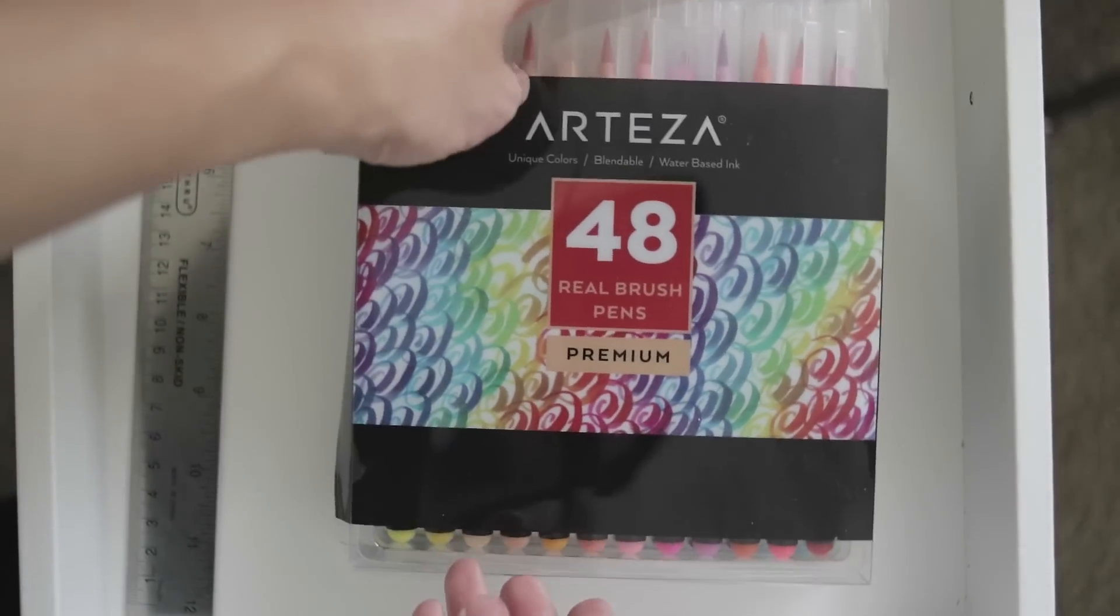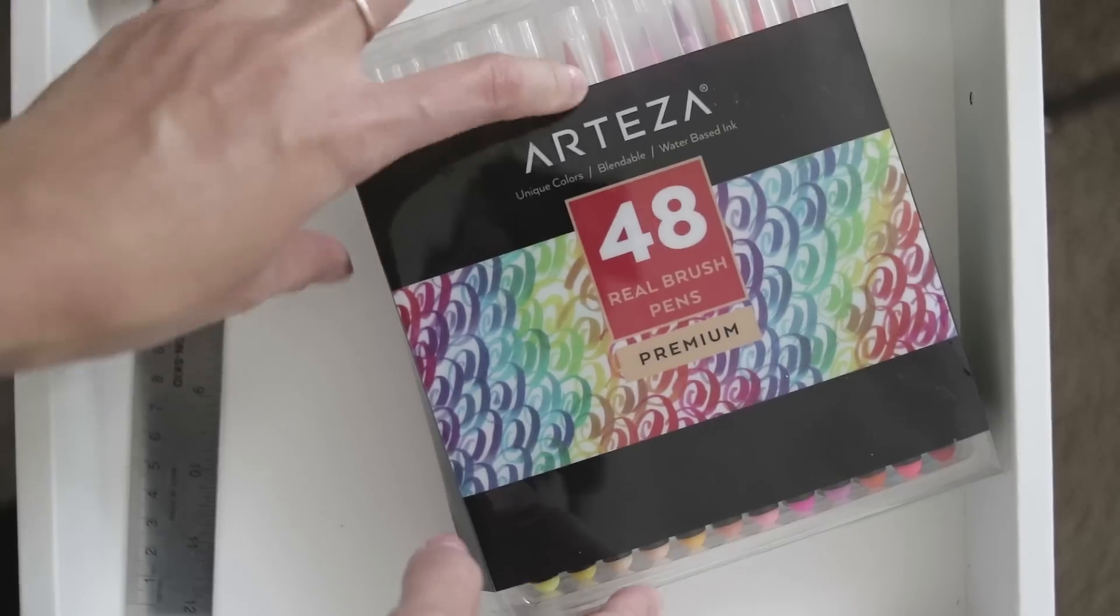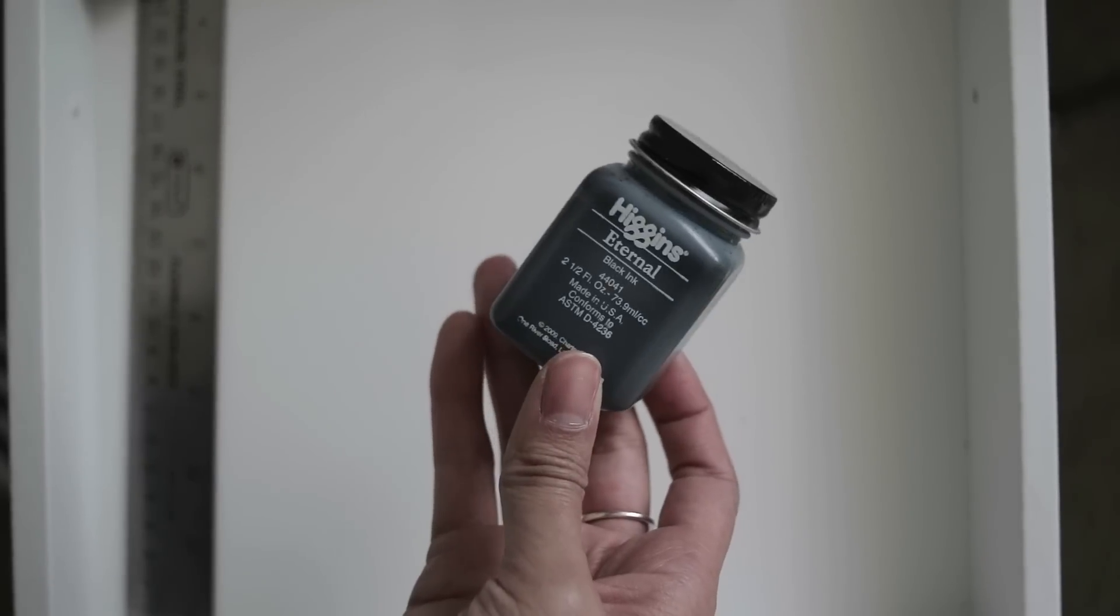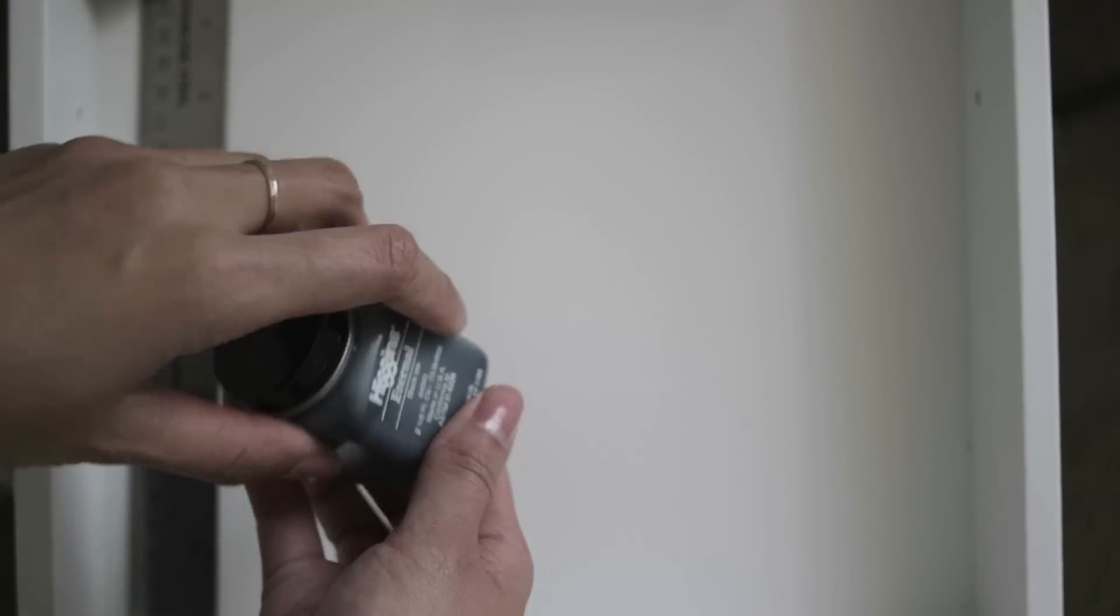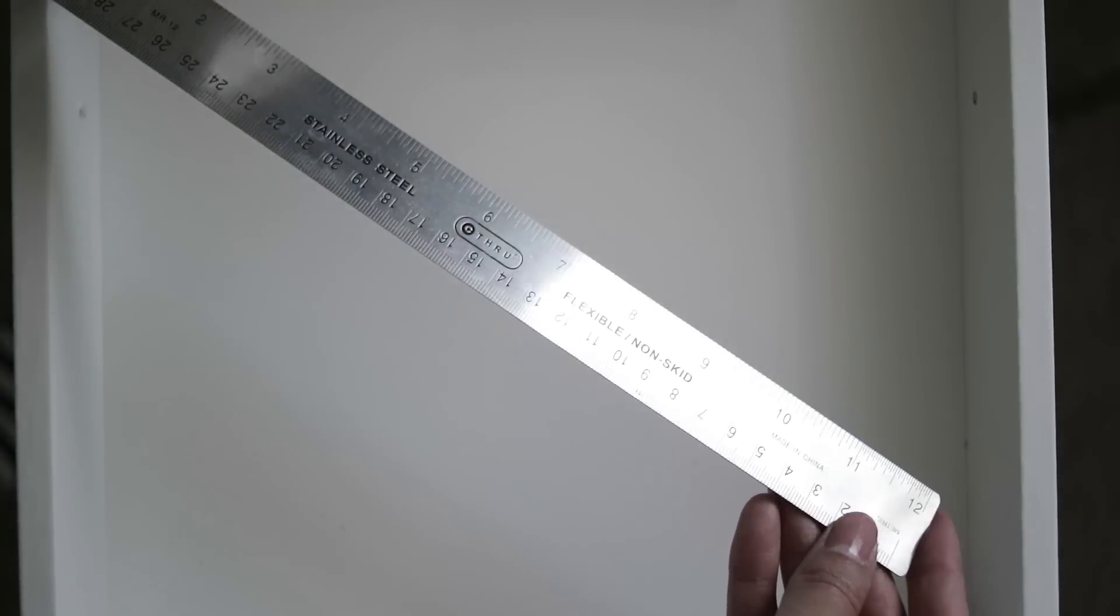And behind it, I have the Arteza Real Brush pens in a set of 48. And on the side, I have some Higgins ink that I use along with this bamboo pen. And then I have a standard ruler on the side.